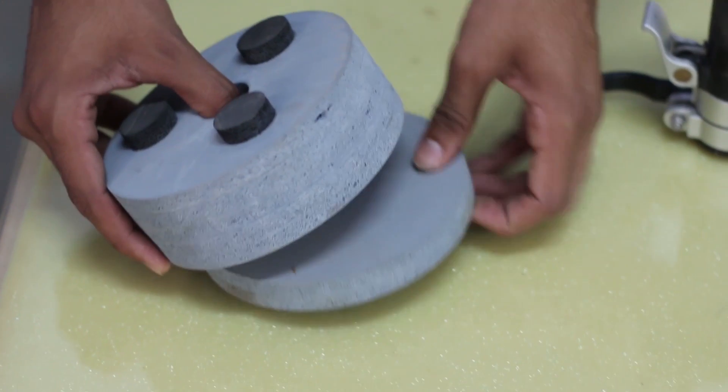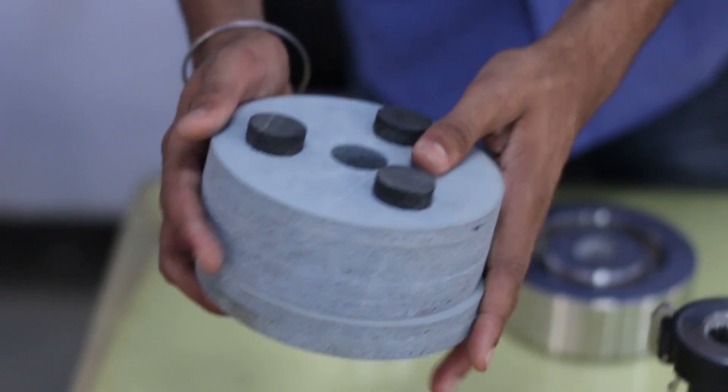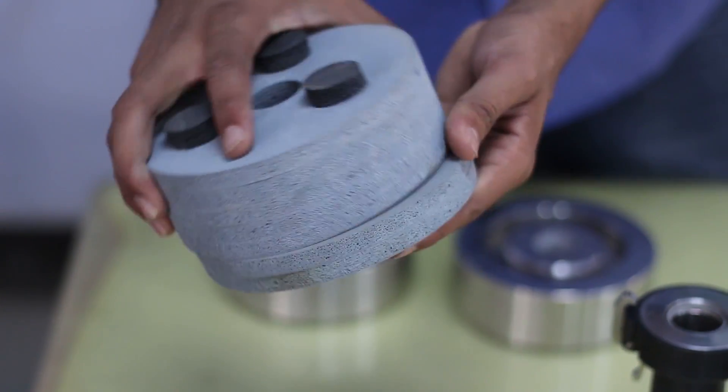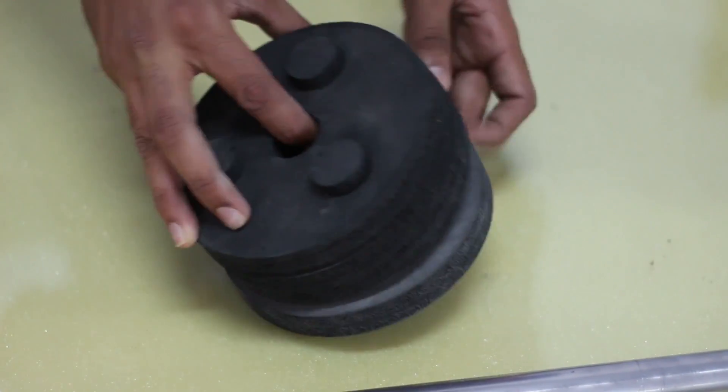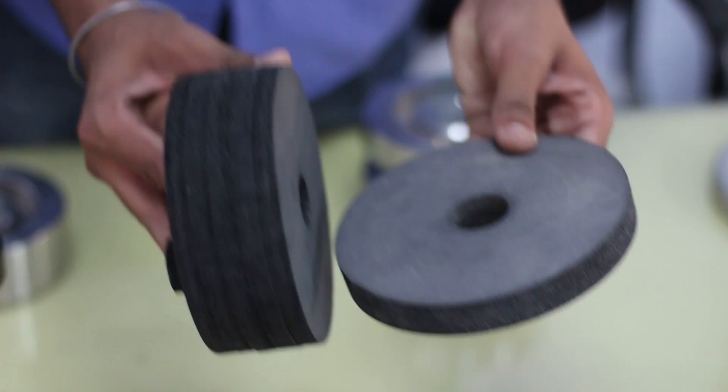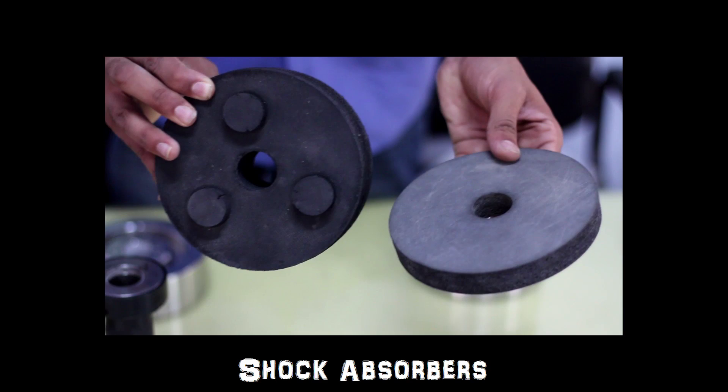These are called shock absorbers or buffer stacks. Here you can see two types of buffer stacks. On the left you can see a buffer stack which is made of 4 pads. On the right you can see a buffer stack made of 2 pads.